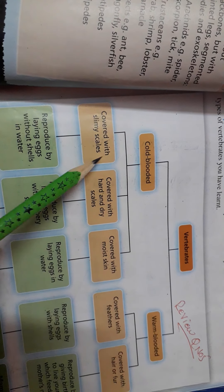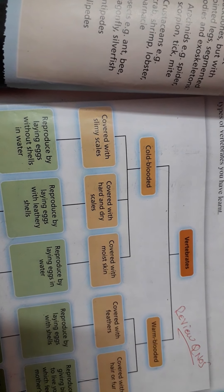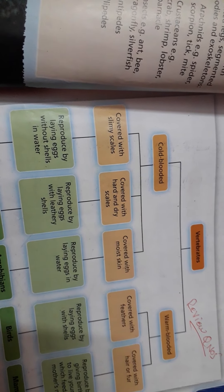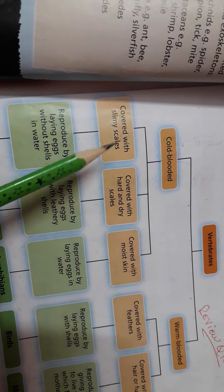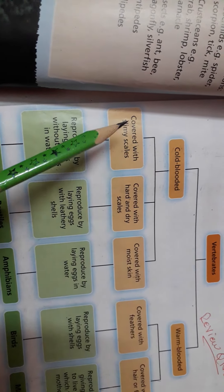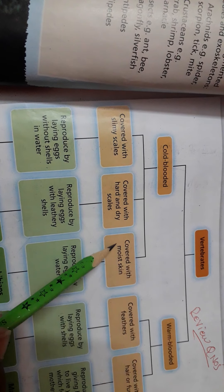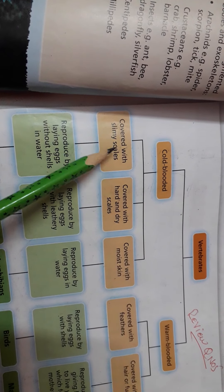Among cold-blooded animals, we can observe further differences. Some animals have bodies covered with slimy scales that help them to swim. Others have bodies covered with hard and dry scales that help them to crawl on the ground. And some animals have moist skin. So within cold-blooded animals, there are three distinguishing features related to body covering.